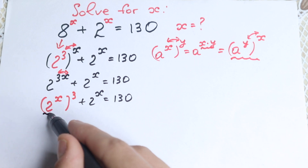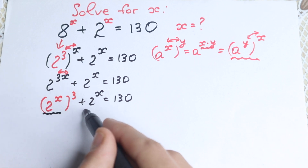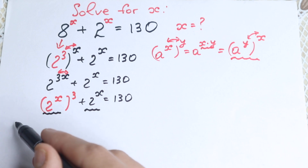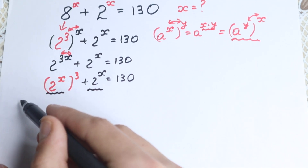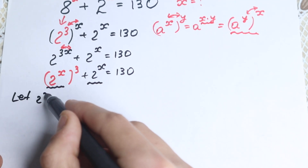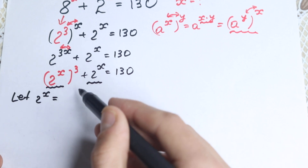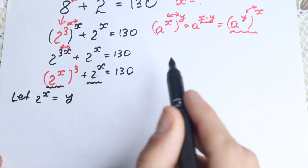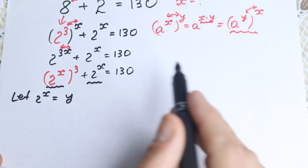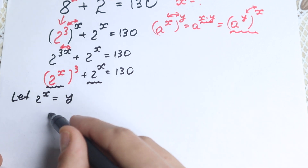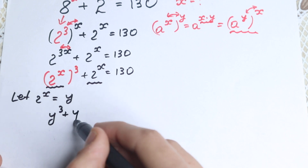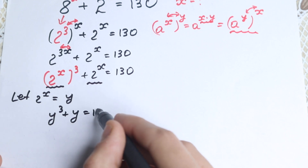Right now we have 2 to the power x and 2 to the power x — the same thing. So it is really great because we can write a substitution. Let 2 to the power x equal to y. Then we have our equation, and on the first side this is like a cubic equation. We will have y cubed plus y equals 130.